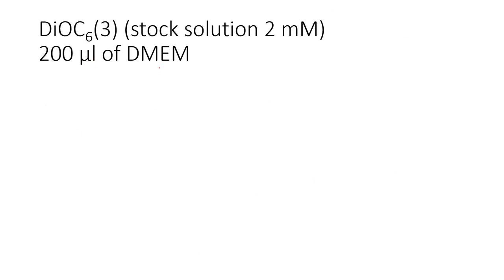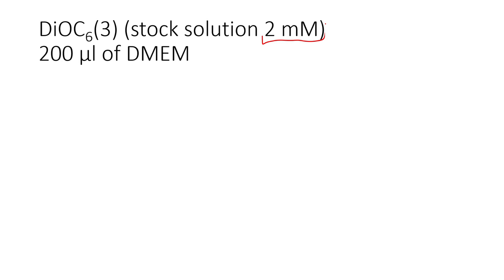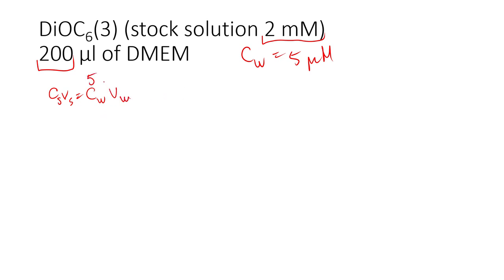Let's switch to the next example. We have DIOC with a 2 millimolar stock concentration. The working solution should be 5 micromoles per liter and the working volume is 200 microliters. We calculate both imperfect and clean volumes. For the imperfect one, using C_stock × V_stock = CW × VW: 5 × 200 = 2000 × V_stock, so V_stock = 1000/2000 = 0.5 microliters.